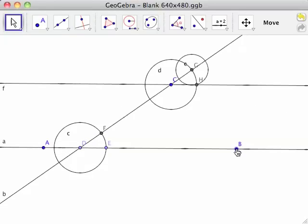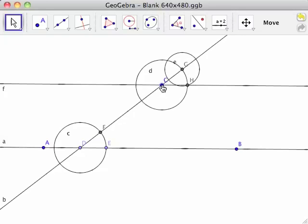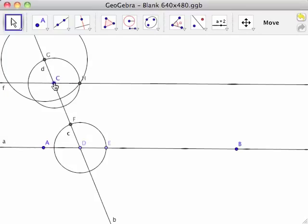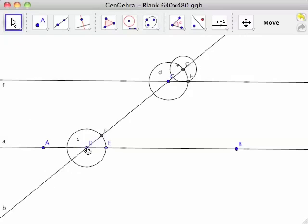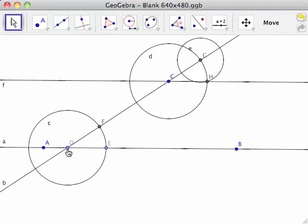Moving point C will result in changing the radius of circle E as well as the slope of line CD. Moving point D between points A and E will affect the radii of circles C, D, and E, as well as the slope of line CD.